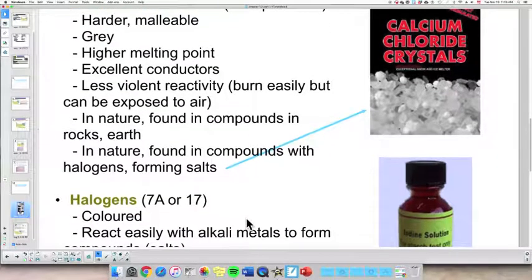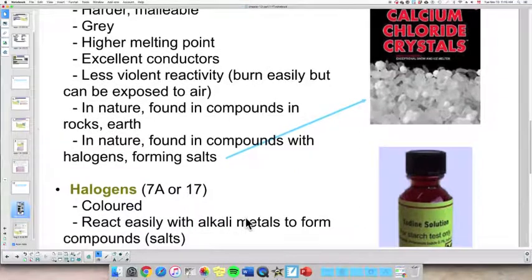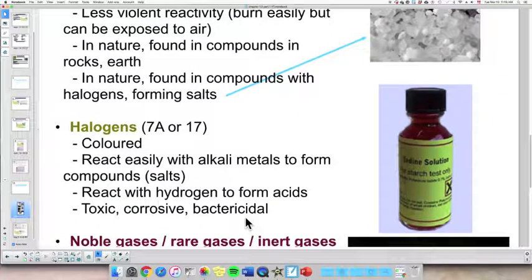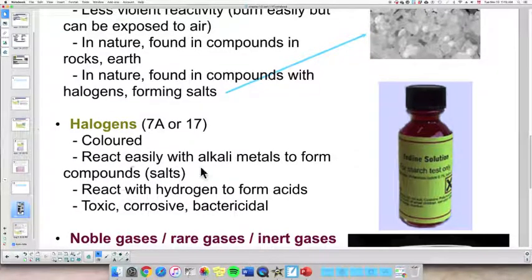Group 7, 7A or 17, those are called the halogens. One important characteristic is that they are colored. They really have various colors. It could be green, it could be yellow, and so on. So they have their own characteristic color. They react easily with alkali metals as well as alkaline earth metals to form salts.